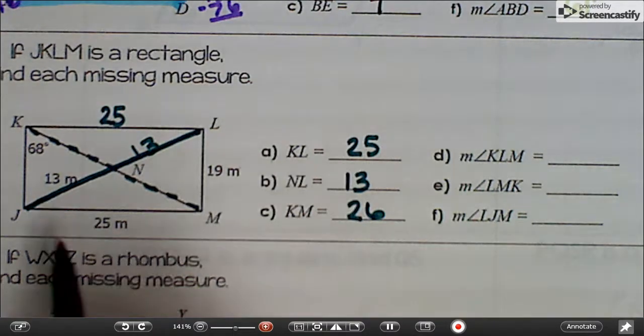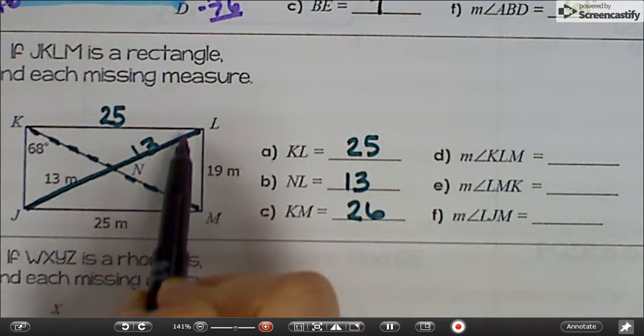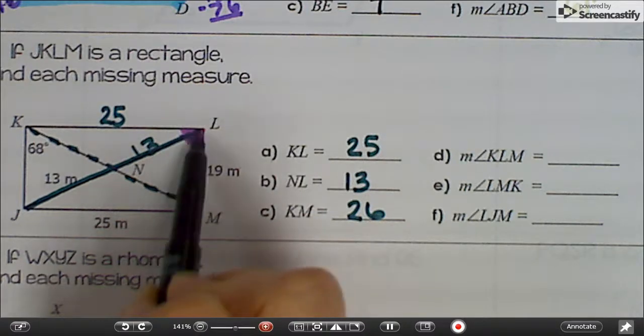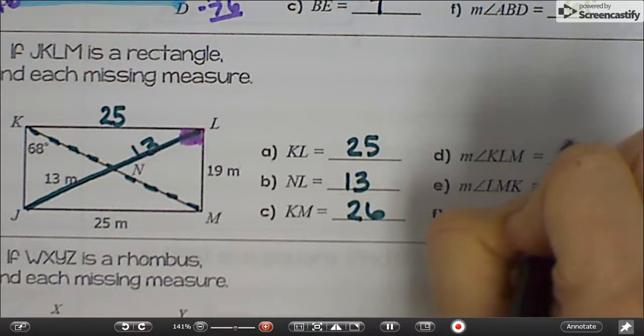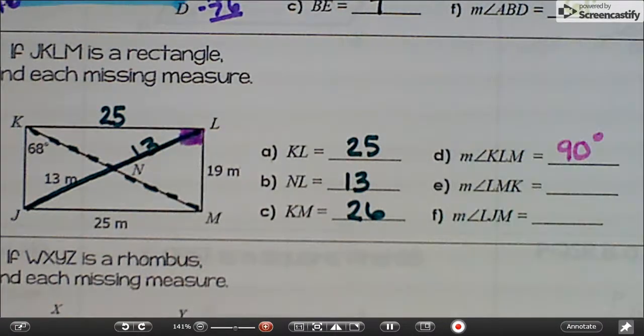Angles. Angle KLM is this angle right here. What do you know about the angles in a rectangle? Well, what makes it a rectangle is that they're 90 degrees. They have right angles in all the corners. So that has to be 90.